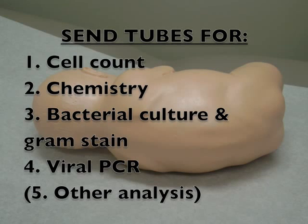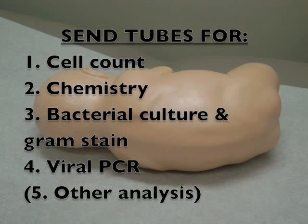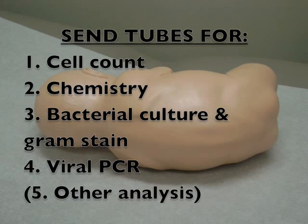You will typically send off your tubes for cell count, chemistry, bacterial culture and gram stain, and viral PCR. Other fluid analysis may be necessary depending upon the indication. If there is blood, you will need to decide whether it is blood or bloody CSF. If it is blood, take the needle out and try again. Bloody CSF, however, is not as dark and it will not clot — eventually it should run clear. In the case of bloody CSF, use the last collected tube for cell counts to minimize the effect of the blood.